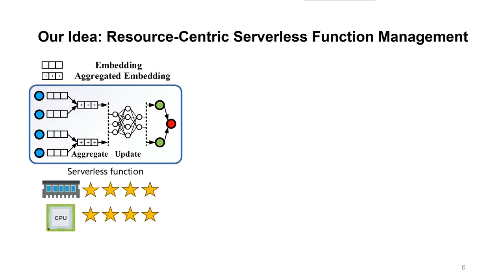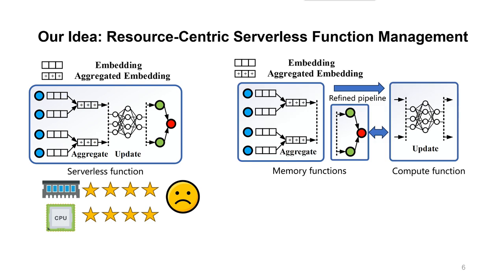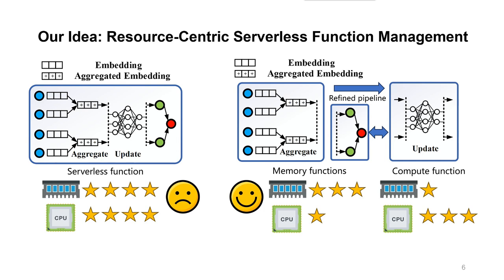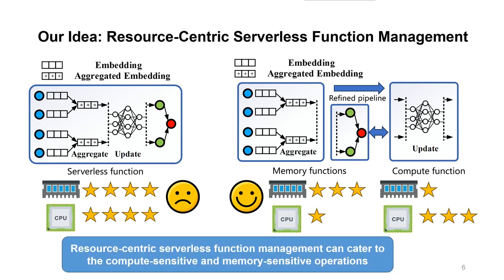Another observation is that GNN aggregate and update operations have different resource sensitivities. Coarse-grained resource allocation leads to inefficient resource utilization, which suggests a resource-centric approach to serverless function management. Specifically, we can manage functions in resource groups, decoupling memory-sensitive aggregates and compute-sensitive updates, and enabling fine-grained resource allocation for each of them.